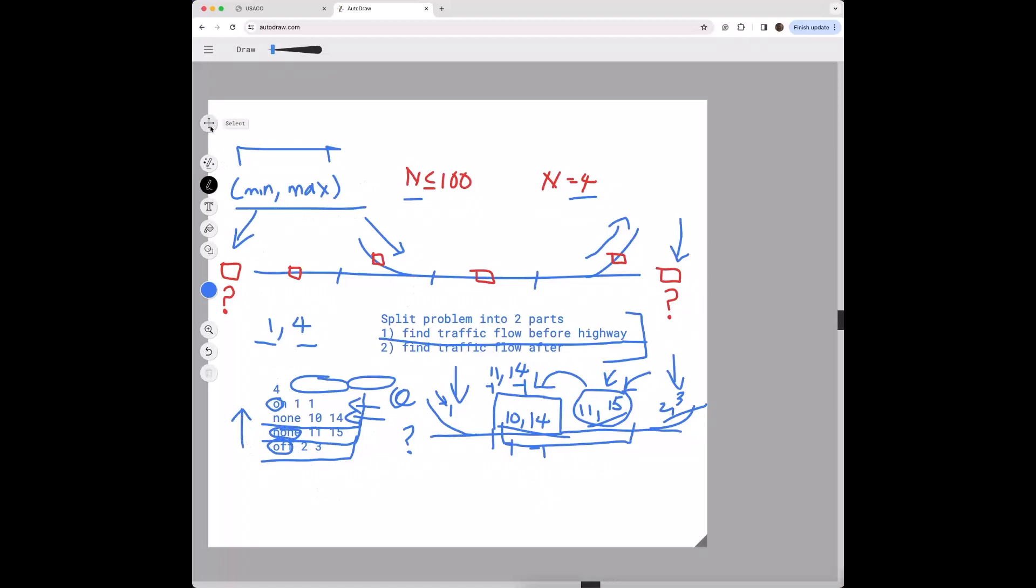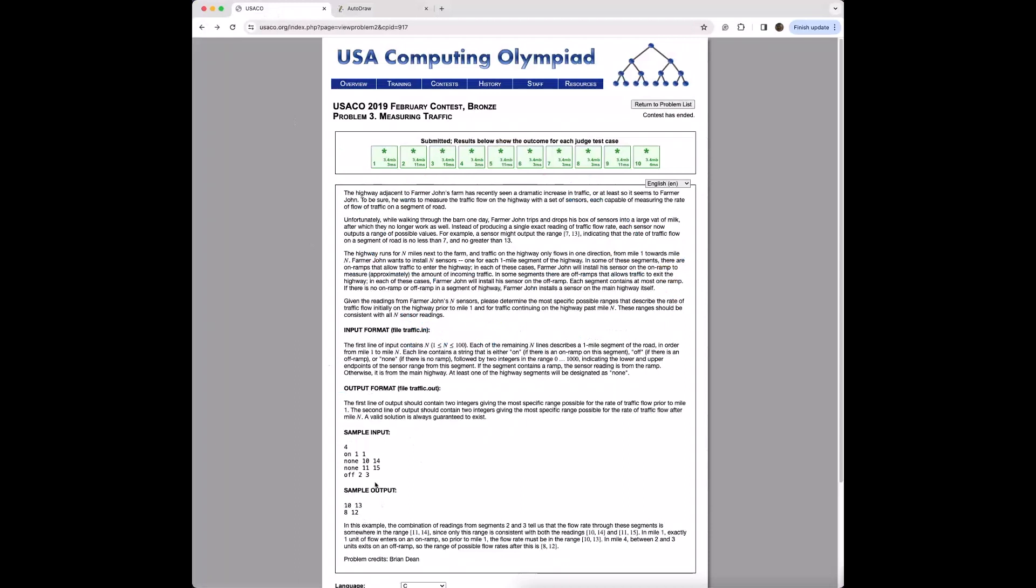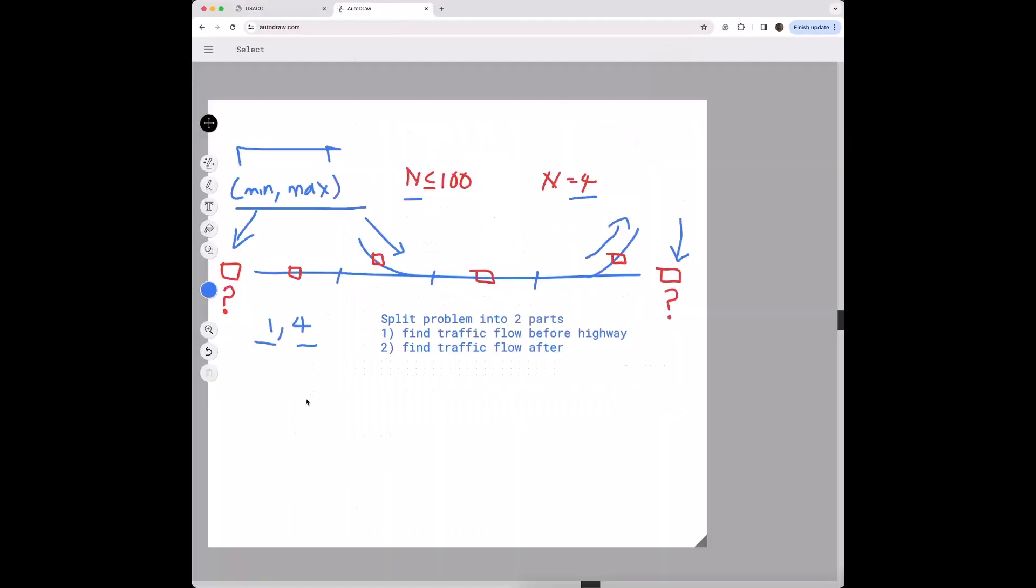I guess what we can do is get a little bit more specific. So as we're iterating upwards we can either encounter an off, we can encounter... I guess we'll actually start with an on.